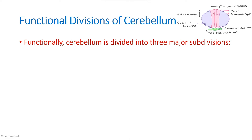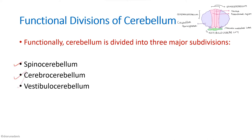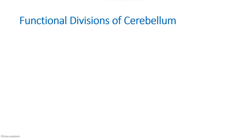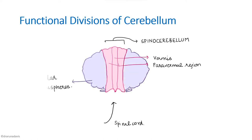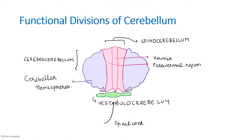Functionally, the cerebellum is divided into three major divisions: the spinocerebellum, cerebrocerebellum, and vestibulocerebellum. The vermis and paravermal region together are called the spinocerebellum because this region receives inputs from the spinal cord. The cerebellar hemispheres are called the cerebrocerebellum because they receive impulses from the cortex. Finally, the flocculonodular lobe receives information from and projects to the vestibular nuclei, which is why it is called the vestibulocerebellum.